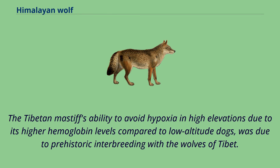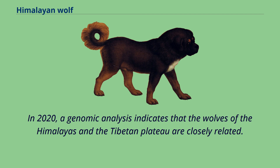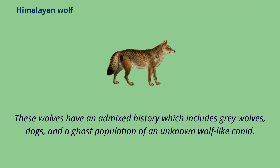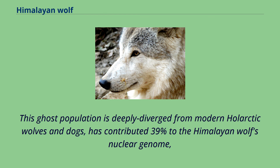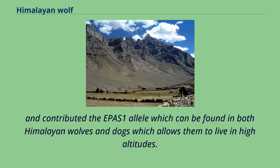In 2020, a genomic analysis indicates that the wolves of the Himalayas and the Tibetan plateau are closely related. These wolves have an admixed history which includes gray wolves, dogs, and a ghost population of an unknown wolf-like canid. This ghost population is deeply diverged from modern whole-arctic wolves and dogs, has contributed 39% to the Himalayan wolf's nuclear genome, and contributed the EPAS1 allele which can be found in both Himalayan wolves and dogs and allows them to live at high altitudes.